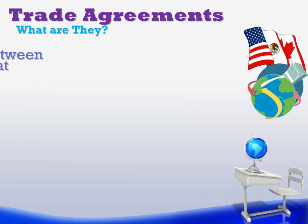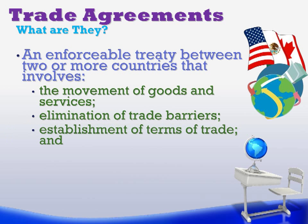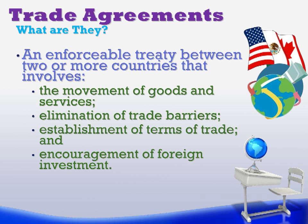So what exactly are trade agreements? Trade agreements are all about making trade easier, to encourage trade. It's an enforceable treaty — really a legal document — to encourage countries, maybe two, three, or four, to increase their trade between them. It's to increase the amount of imports and exports, to eliminate tariffs and other trade barriers such as quotas and subsidies, to establish terms of trade, and to encourage foreign direct investment so that companies set up operations in participating countries and therefore provide jobs and wealth, increasing GDP and countries' wealth.